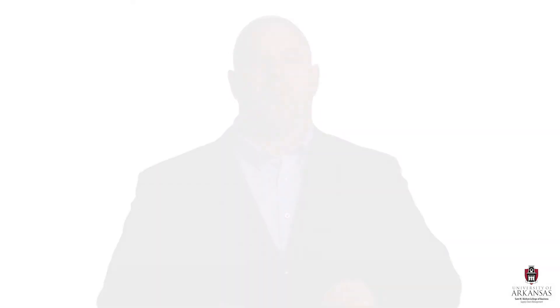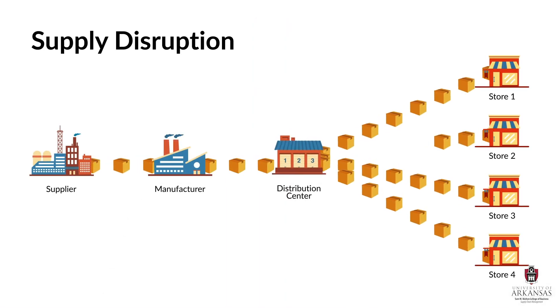Here's another scenario. There are also times when a supply disruption may come from a firm's own internal distribution network. Just like problems can arise with suppliers or manufacturers, things can also go wrong in a distribution center and create a supply disruption for individual store locations.